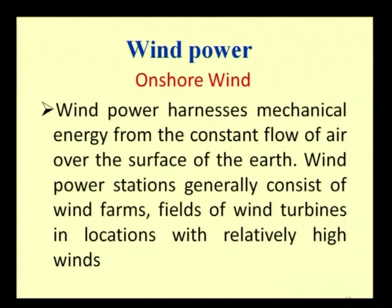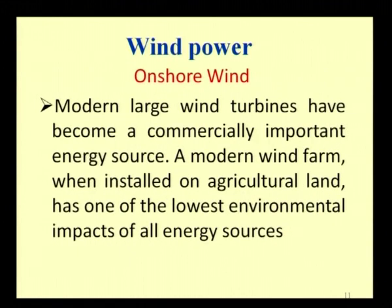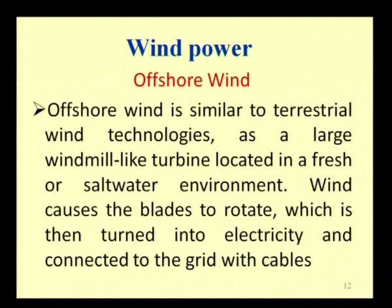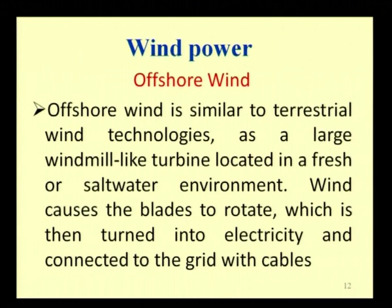Modern large wind turbines have become a commercially important energy source. A modern wind farm, when installed on agricultural land, has one of the lowest environmental impacts of all energy resources. Offshore wind is somewhat similar to terrestrial wind technologies — a large windmill-like turbine is located in a fresh or salt water environment. The wind causes the blade to rotate, which is then turned into electricity and connected to the grid with cables.